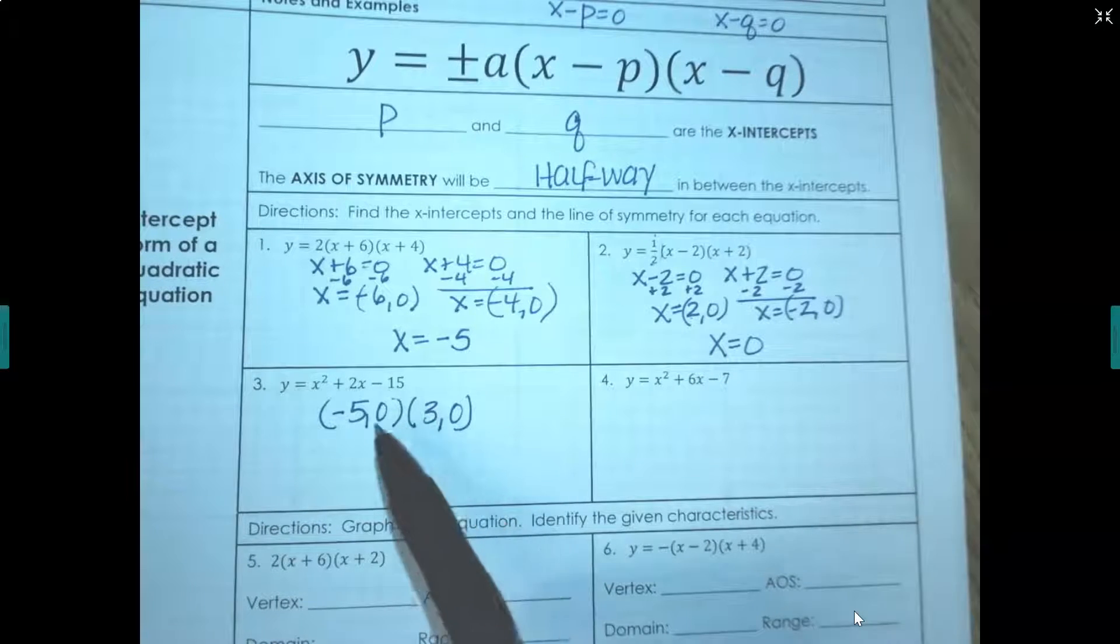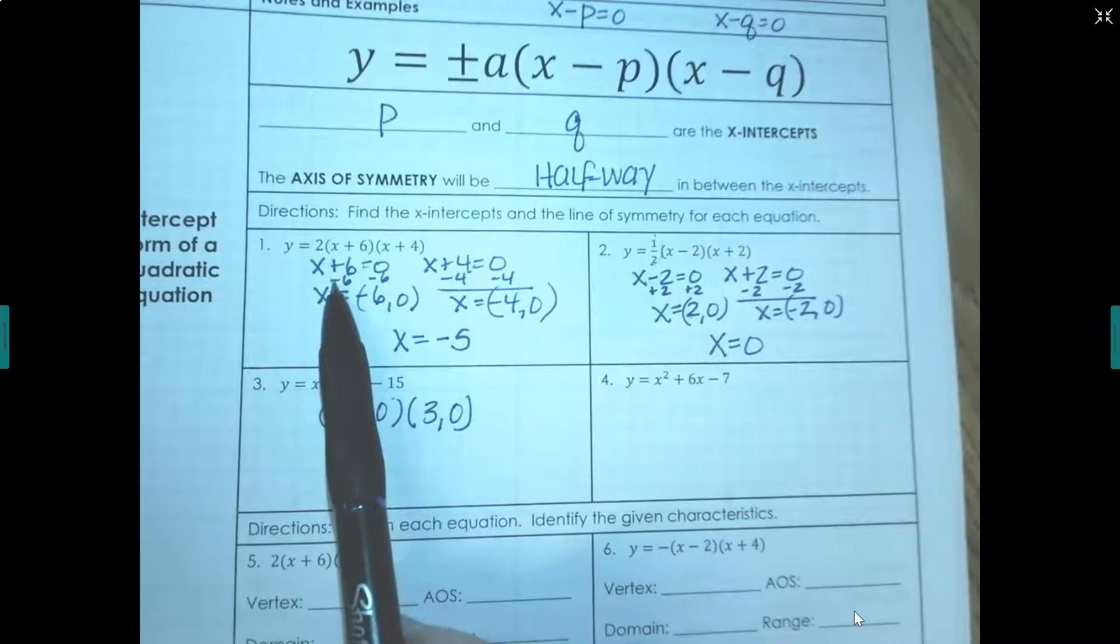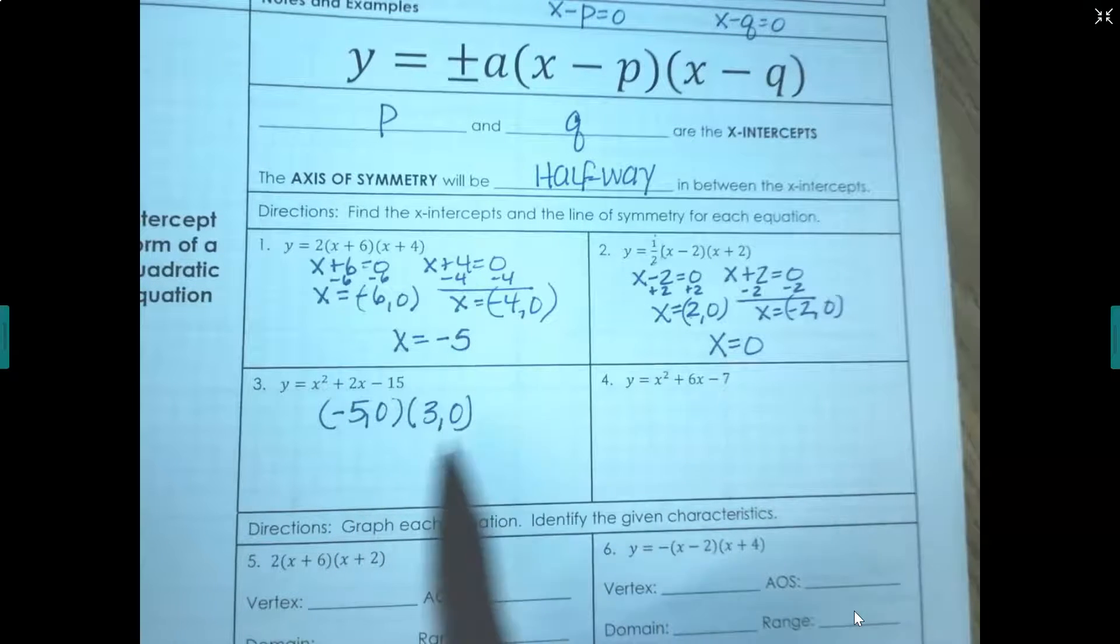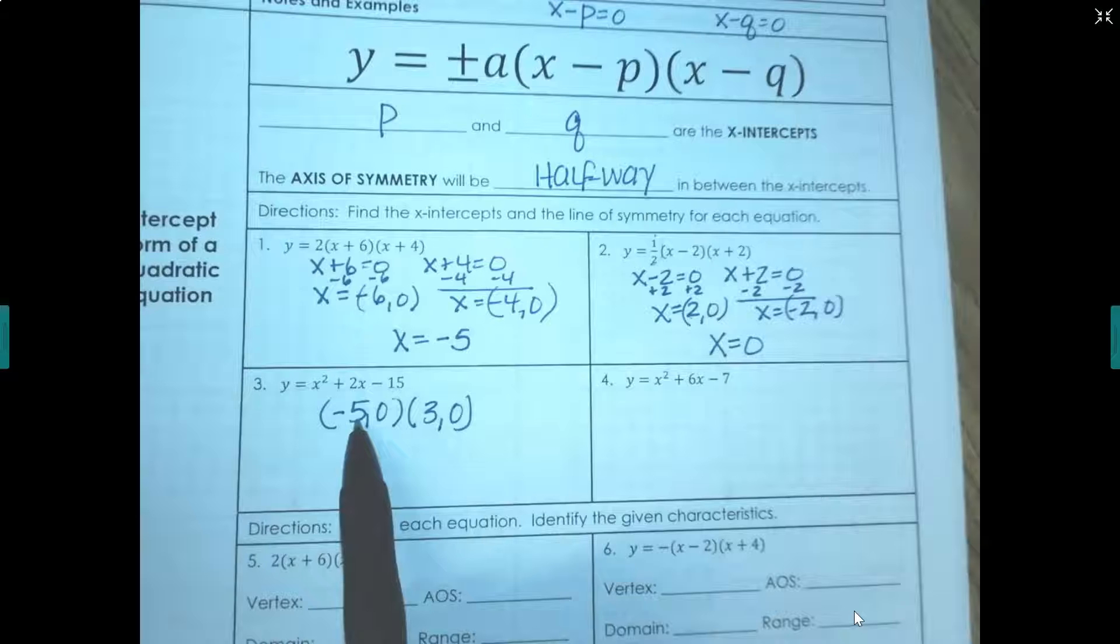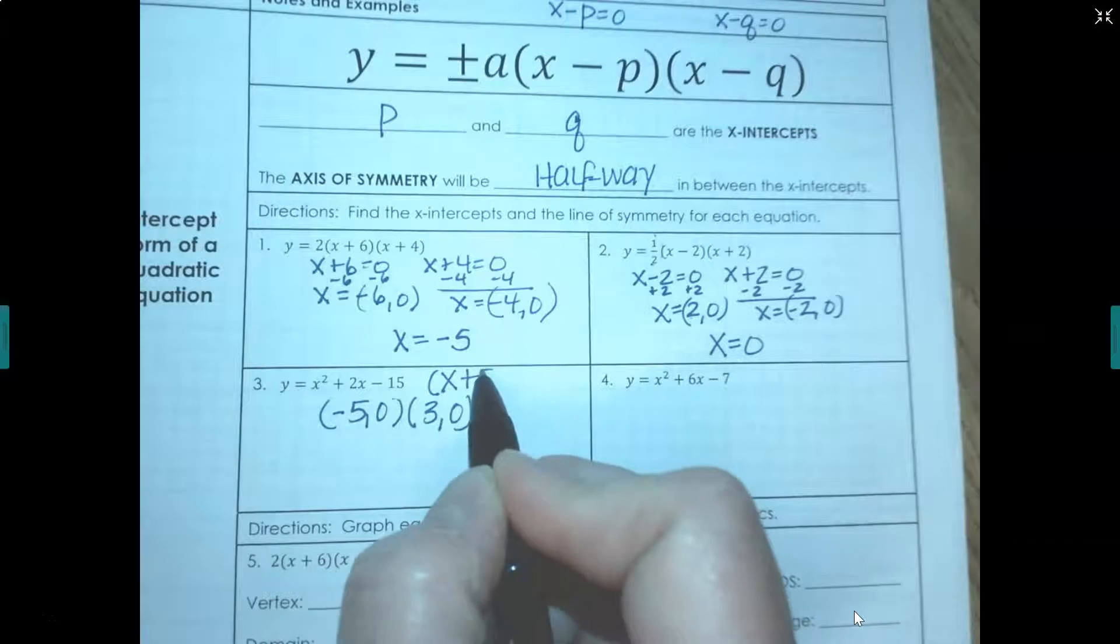Now we could actually work backwards and put this 5 and 3 back in because remember when we solved, you see how the sign changed every single time we solved? So when it solved, this x-intercept is at negative 5,